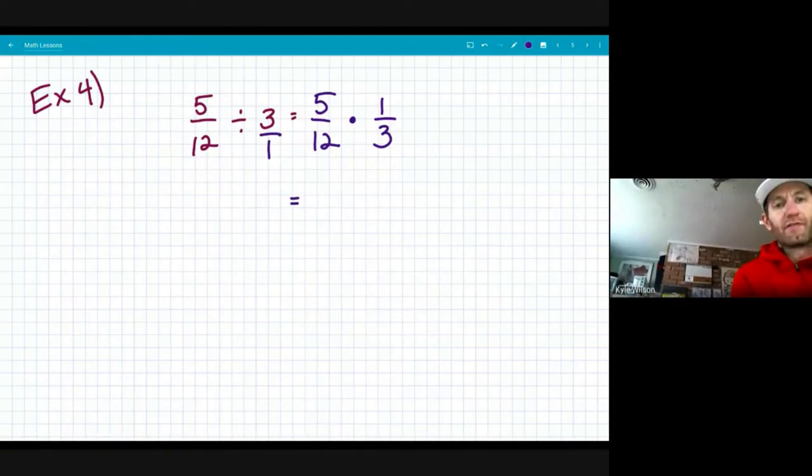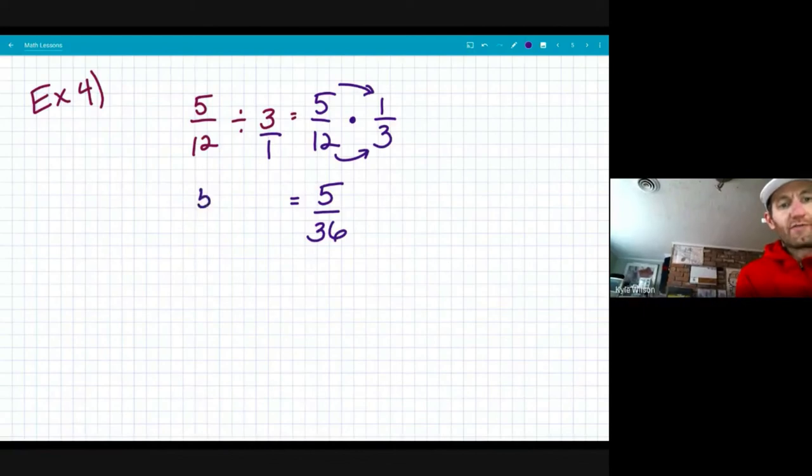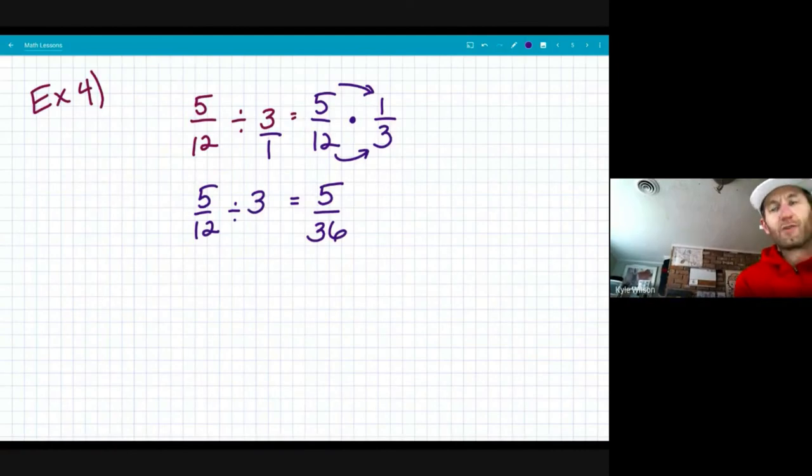Stacking my equal signs here. Five times one is five and twelve times three is 36. So my final answer, five twelfths divided by three equals five thirty-sixths.